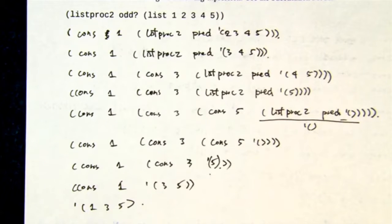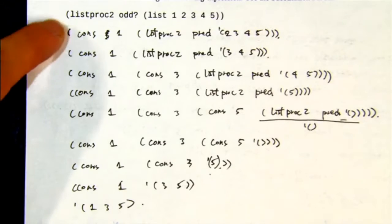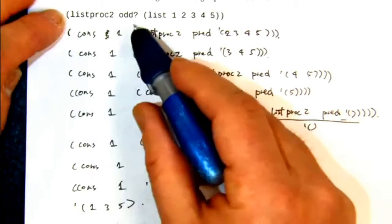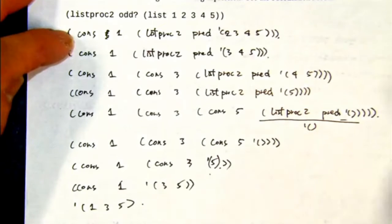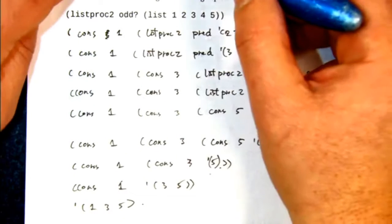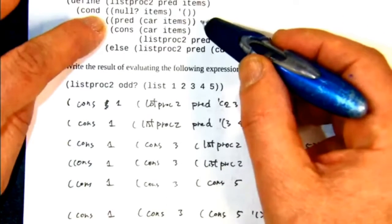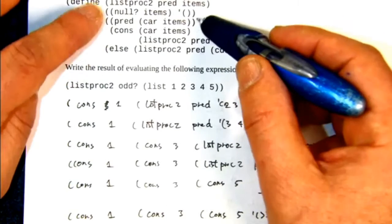So the first recursion, this recursive call gets replaced with the cons statement. Items aren't null. The key is—all right, I'm off the screen—so there's three cases. One is the base case.